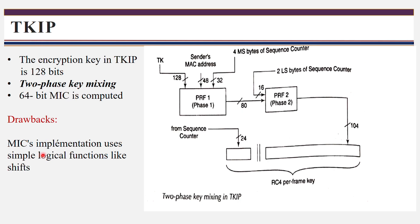However, TKIP also has a drawback. The MIC is calculated using a function limited to only logical shift operations — MSB and LSB bit shifts. This is better than CRC, but it is not enough to provide full integrity because the operations are limited. If an attacker guesses once, they can easily perform the same shift operation to forge the integrity check. So TKIP's MIC is better than CRC but still insufficient.